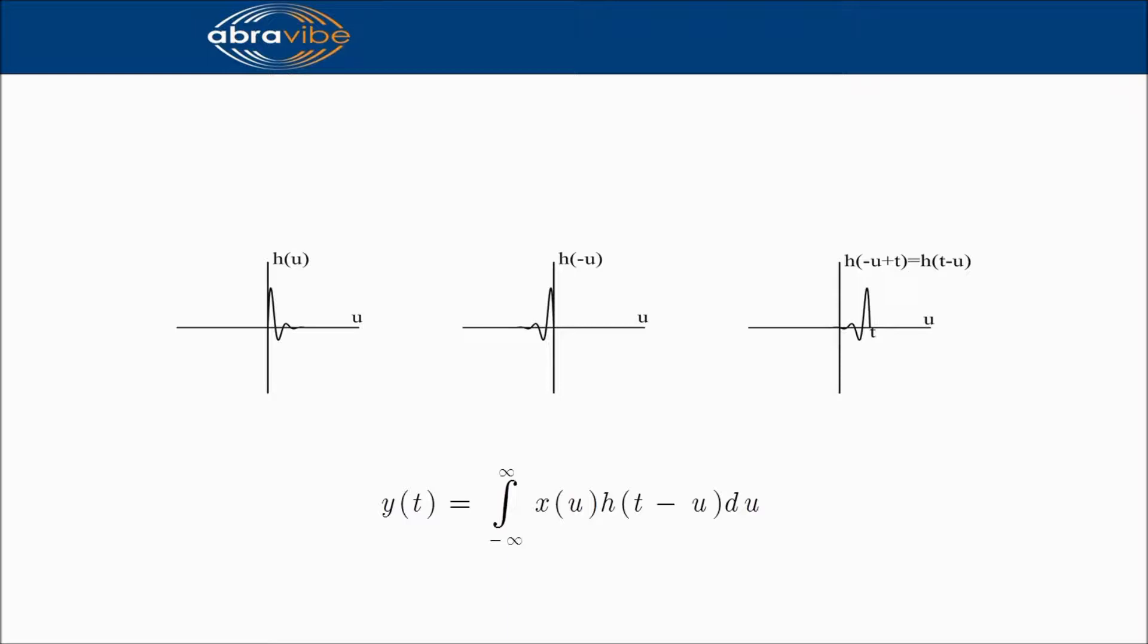If you have trouble with this, you should look at where the point h of 0 is. For h of t minus u, we obtain h of 0 when t minus u is 0, that is, when t equals u.